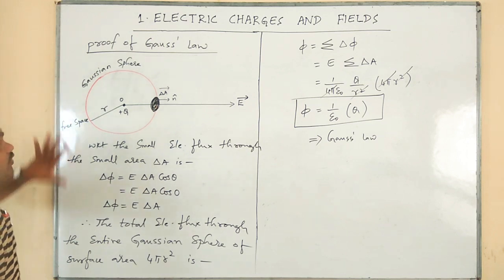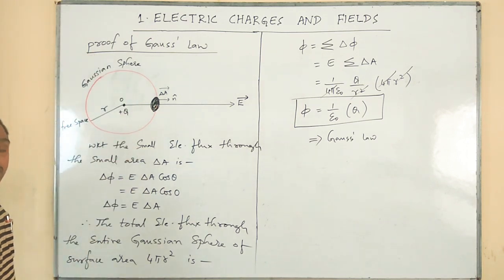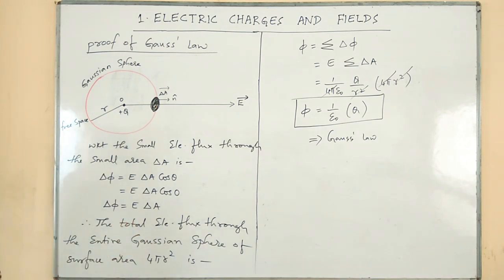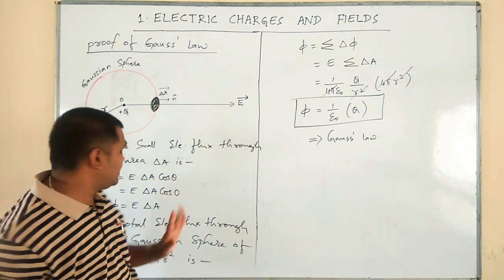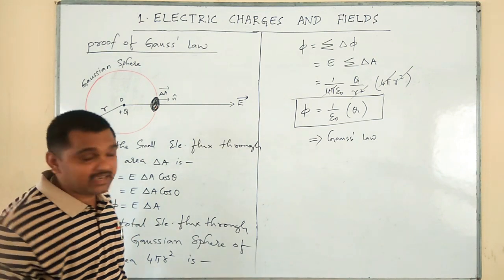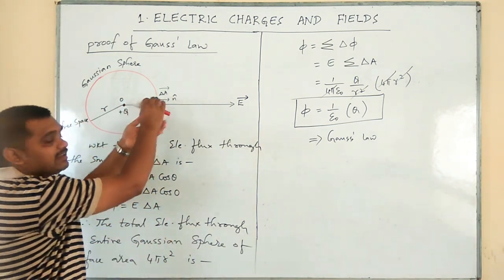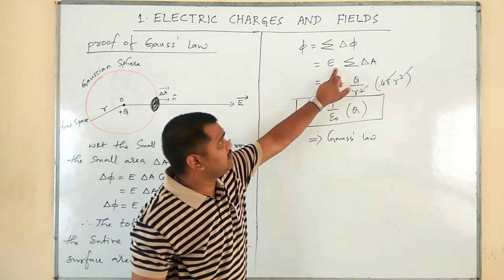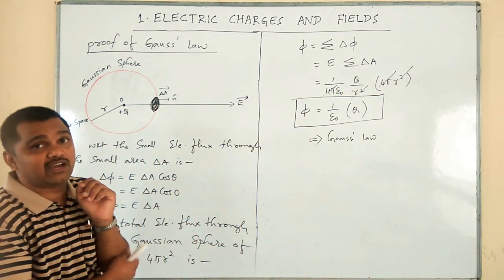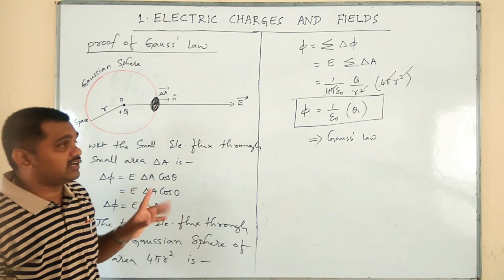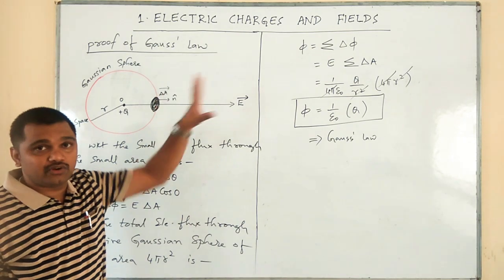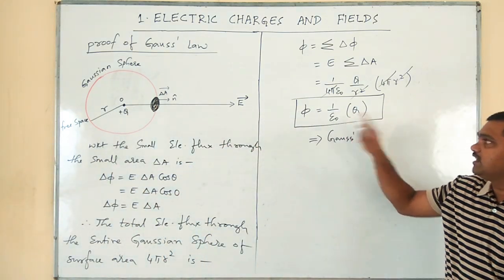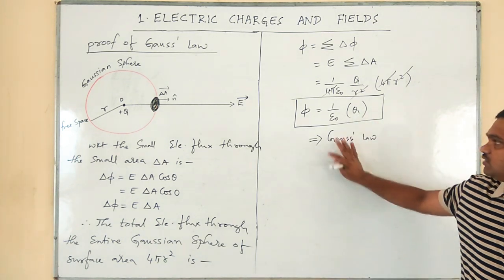To find the total electrical flux through the entire Gaussian sphere of surface area 4 pi R squared: phi equals summation of delta phi. Taking E outside, summation of delta A gives capital A equals 4 pi R squared. Substituting the expression for electric intensity — 1 over 4 pi epsilon-naught times Q divided by R squared — and cancelling 4 pi and R squared, finally phi equals 1 over epsilon-naught times capital Q. This is called Gauss law.